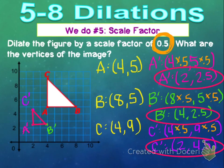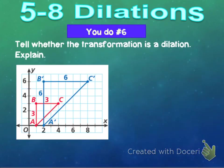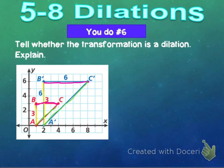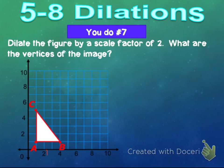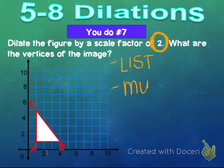On your own, try two more. Number six: tell whether this transformation is a dilation — compare your ratios side to side, top to top, side to side. If they're all the same, it's a dilation; if not, it's not. Number seven: dilate the figure by a scale factor of 2. List your original vertices, multiply each coordinate by 2, and then plot your new points.